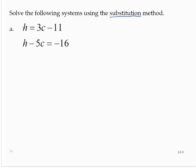We see we have h isolated in the first equation. So we will take 3c minus 11 and substitute it for h in the other equation, yielding 3c minus 11 minus 5c equals negative 16.